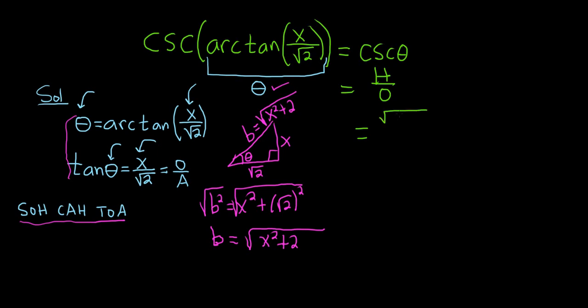Hypotenuse is the square root of x squared plus 2. And the opposite is x, so over x. Wow, and that's it. That's actually the final answer.